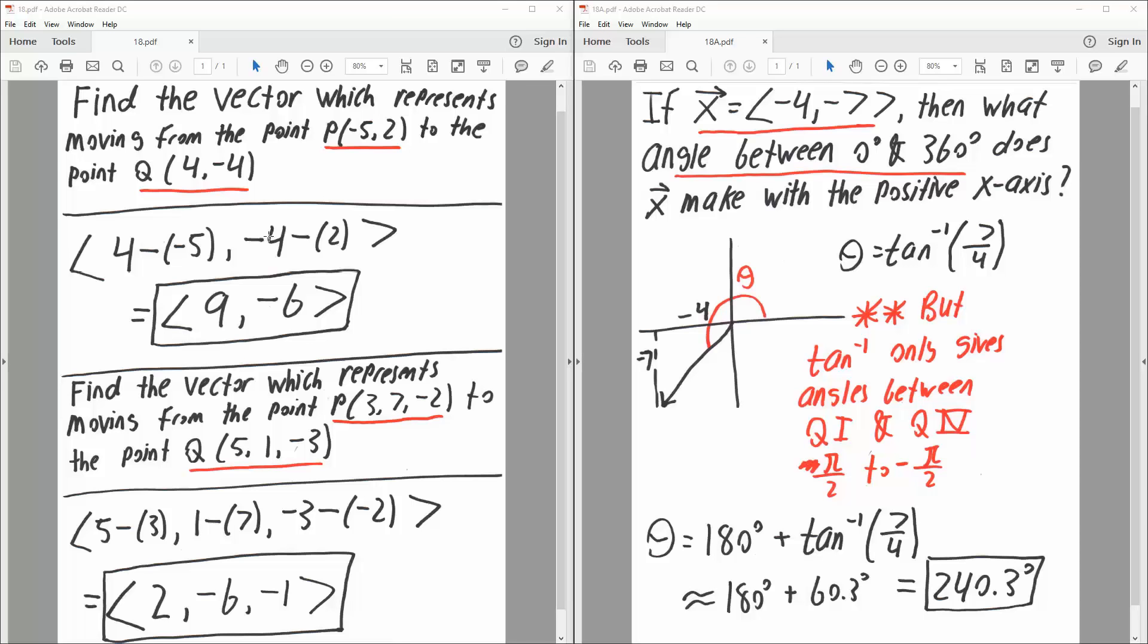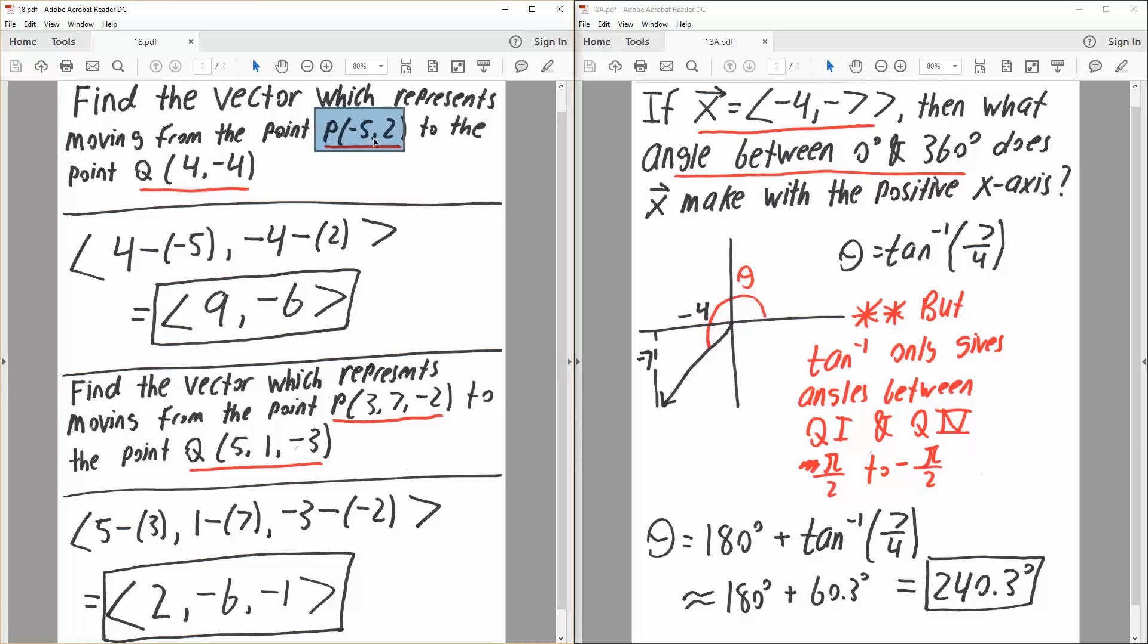Okay, in this video we will go over vectors. We want to find the vector which represents moving from the point P(-5, 2) to the point Q(4, -4). So it's moving from this point and going to this point.